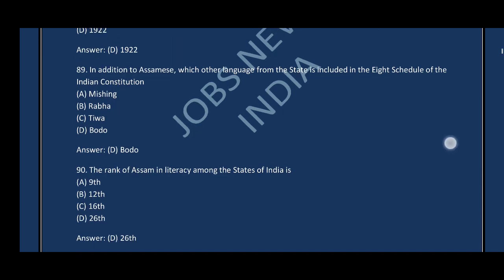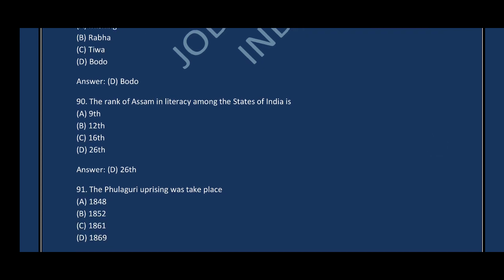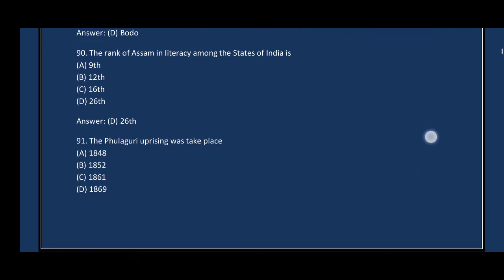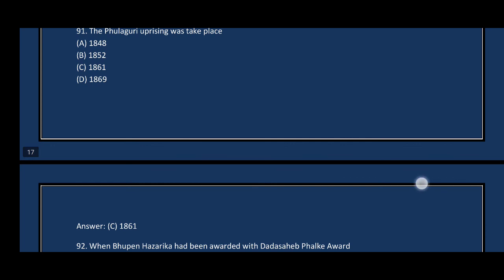Question number ninety: The rank of Assam in literacy among the states of India — the correct answer is option D, 26th. Question number ninety-one: The Phulaguri uprising took place in — the correct answer is option C, 1861.